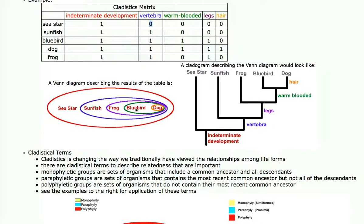Looking backwards, the frog is next in line. It's got 3 1s, so it's the next most related. In the Venn diagram series, a circle goes around it and also around the bluebird and the dog. The same procedure is used for the sunfish. The sea star is the outgroup, the ultimate outgroup in this group, because it possesses the least of all the features that are comparing all these life forms.